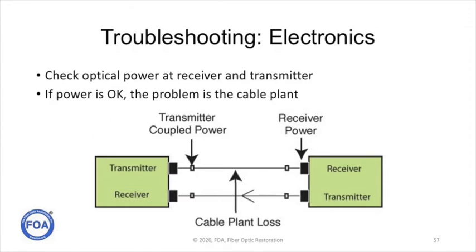The proper operation of a fiber optic link depends on the optical power. You start at the receiver — does it have enough power? If it's within spec, you're okay. If it's below spec, you check the transmitter power and see if it's okay. If it's okay, your problem is the loss in the cable plant. What we've done here is basically a loss test to determine if the cable plant is the problem.